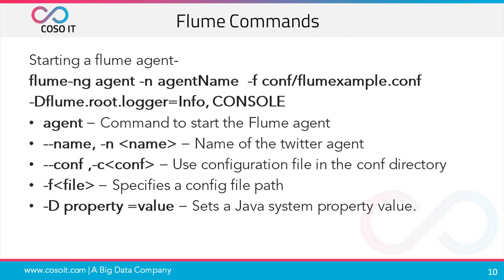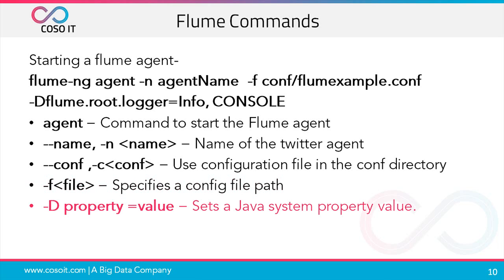After configuring the file, we need to start the Flume agent using the flume-ng command. The flume-ng command takes parameters like 'agent' to start the Flume agent, then dash-dash-name or -n with the agent name. Dash-dash-conf-file uses the configuration file in the conf directory. The -f parameter specifies the config file path. The -D property=value parameter sets a Java system property value — for example, a Java option that forces Flume to log to the console.